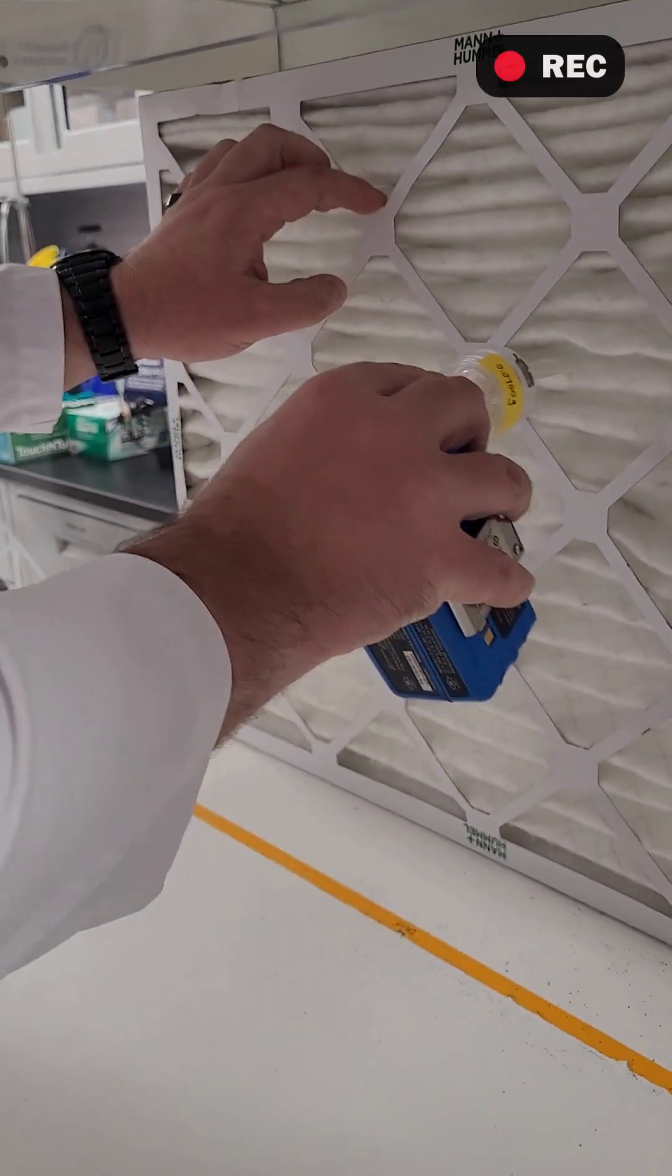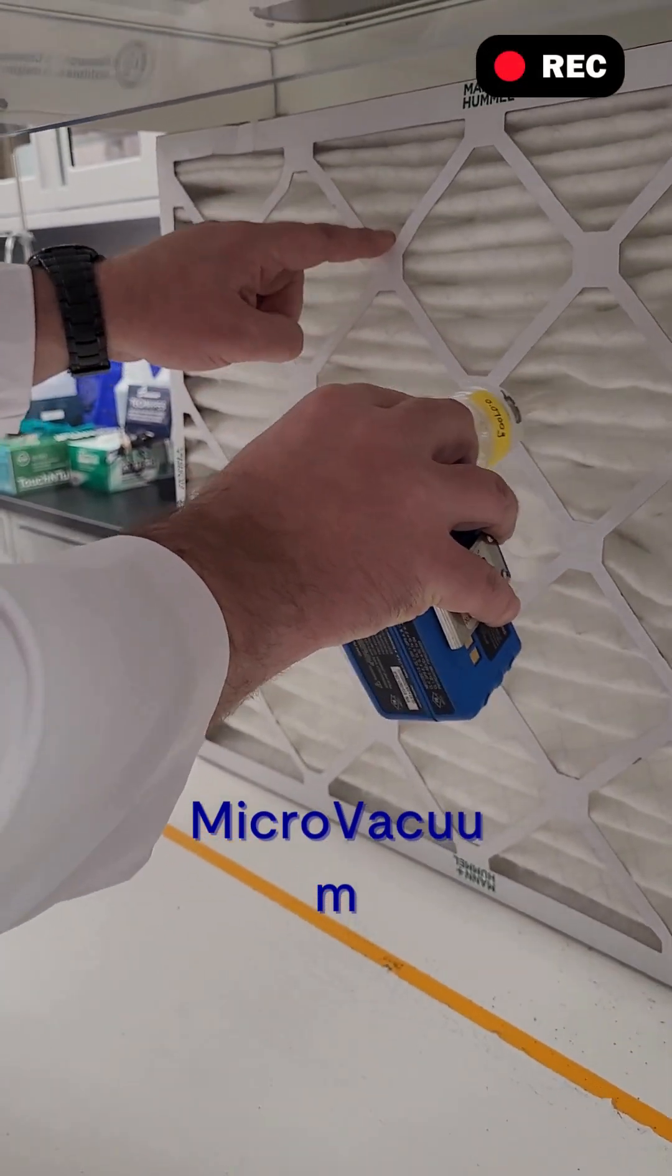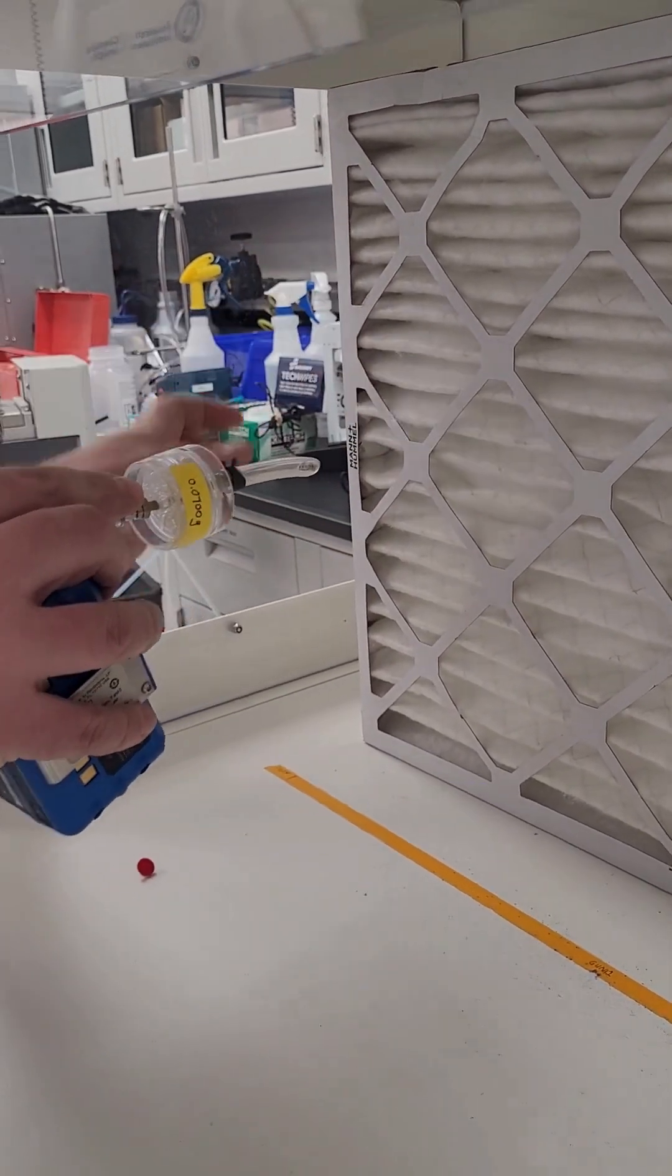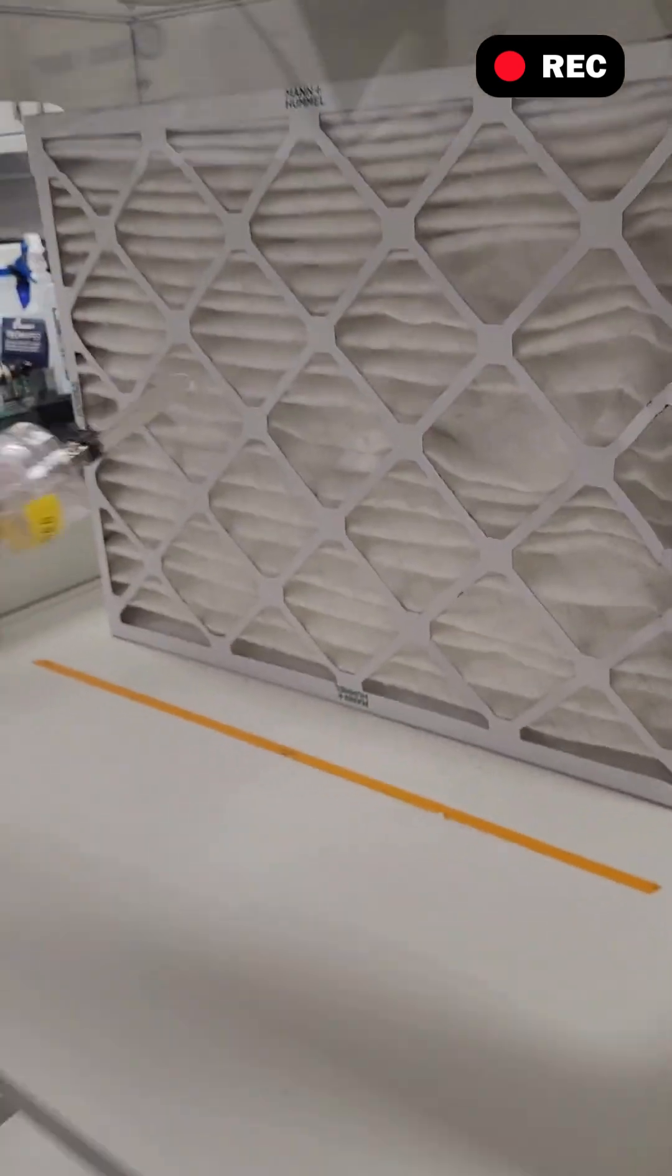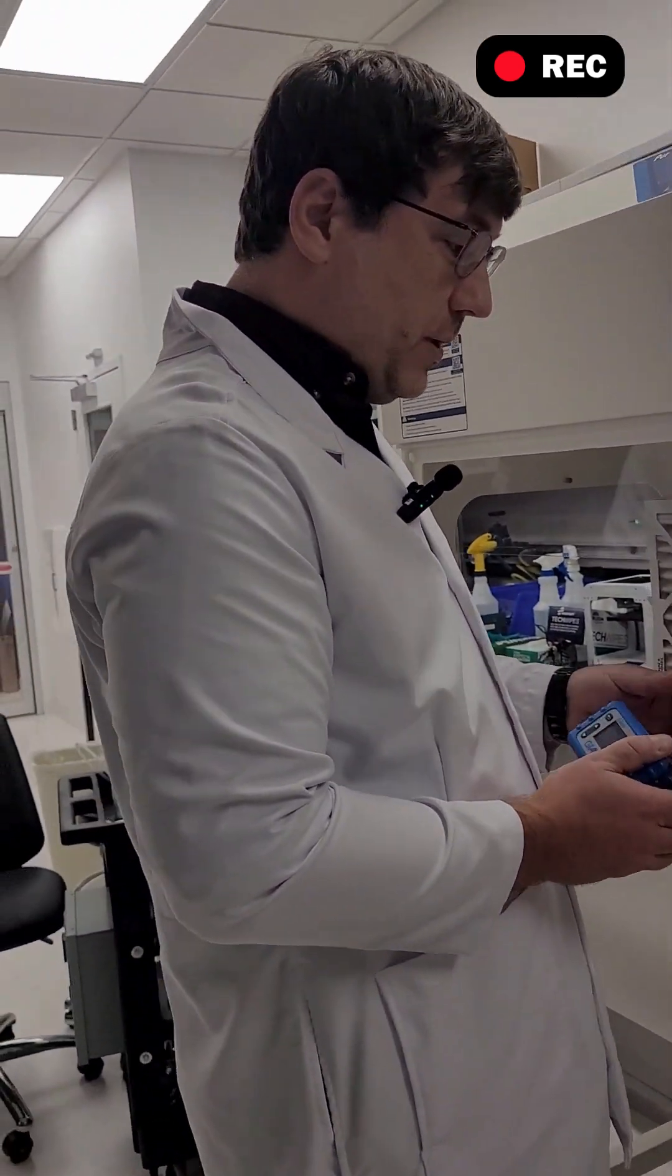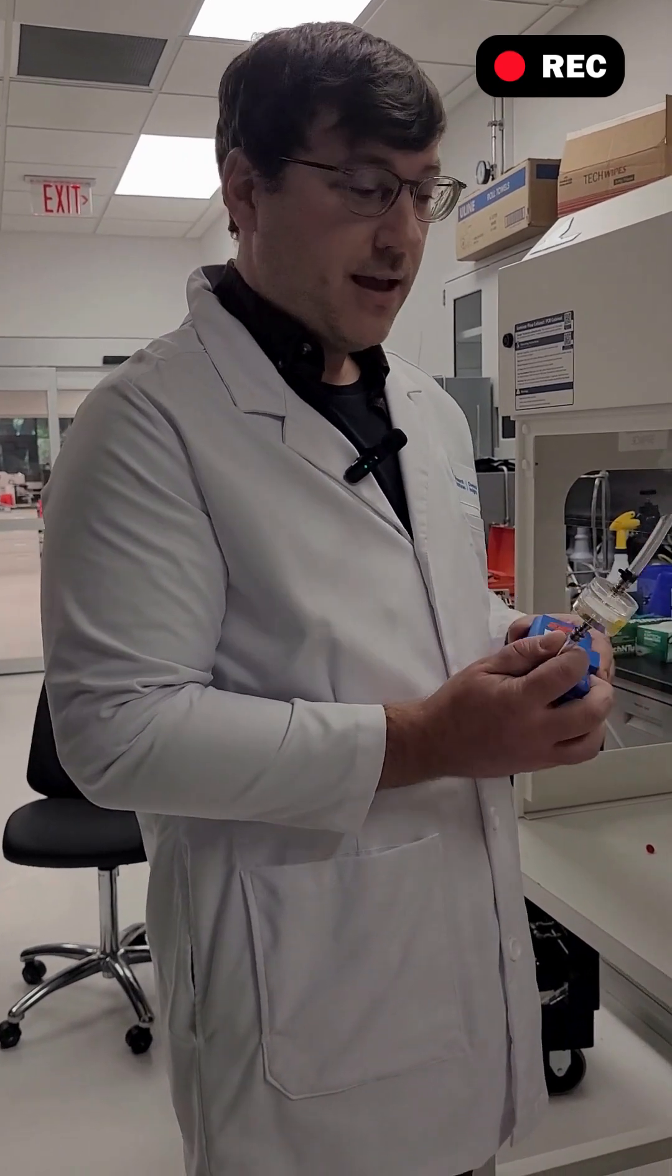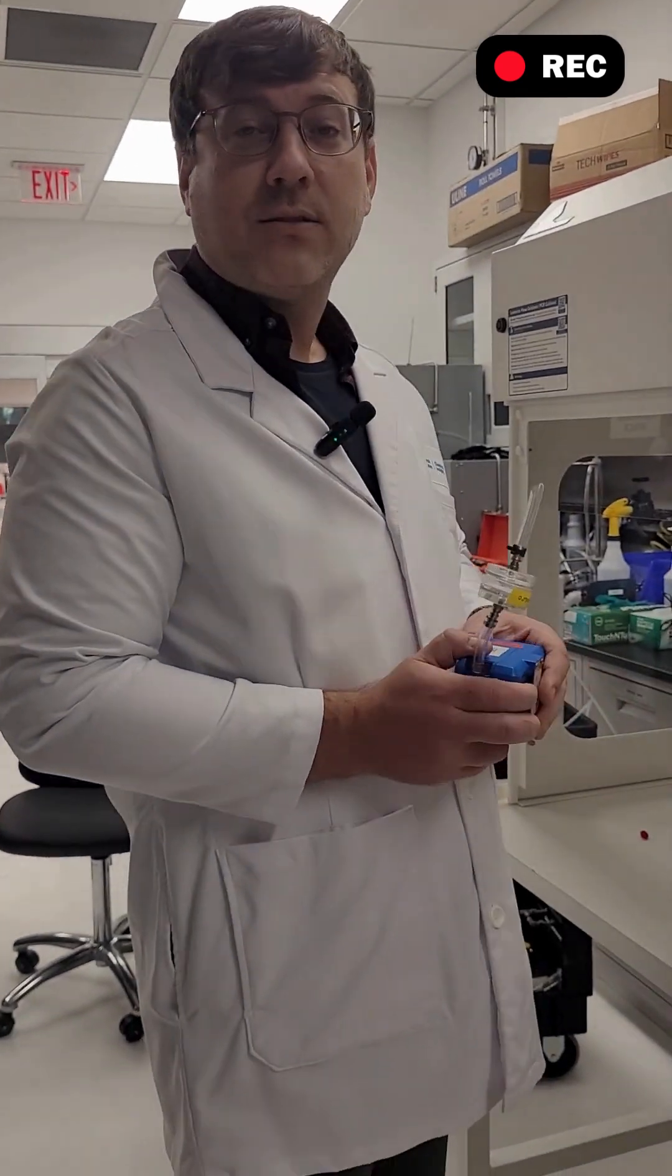I'm gonna go back through and get samples at points two, three, four, and the rest on the bottom: five, six, seven, and eight. Those eight sample points will be enough for us to analyze through ICP-MS and also look at the toxicological impacts of the particulate.